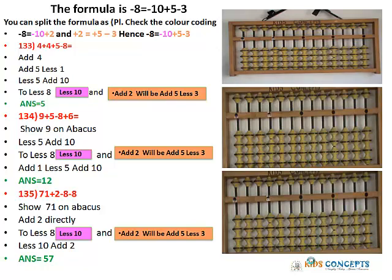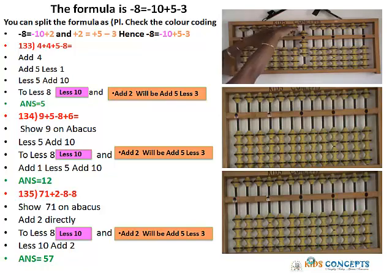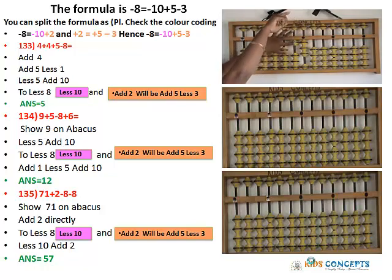First problem: 4 plus 4 plus 5 minus 8. So, 4 on the abacus. Add 4 to it — you have to add 5 minus 1, which is the small system formula. Let's add 5 and less 1. Now add 5 — but you cannot add 5 directly. There is only one formula for Add 5: Less 5, Add 10.